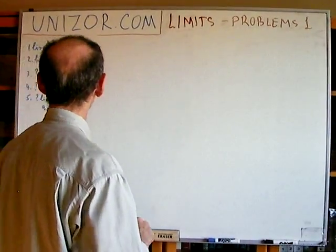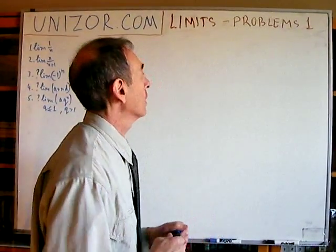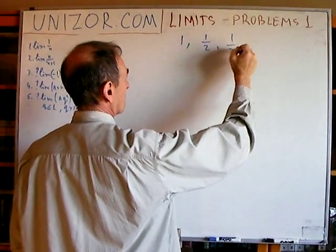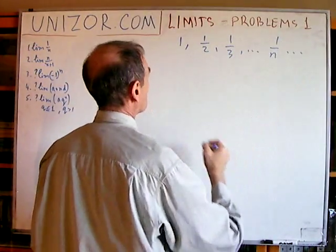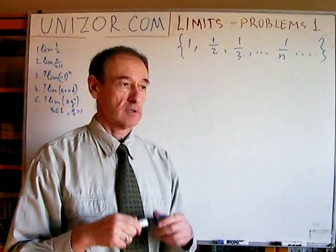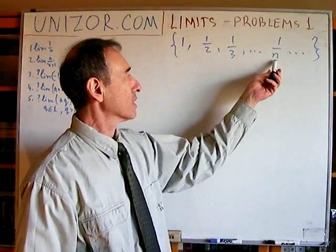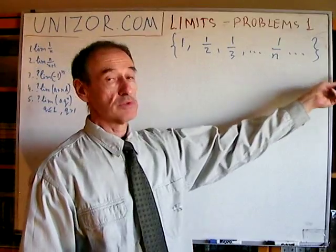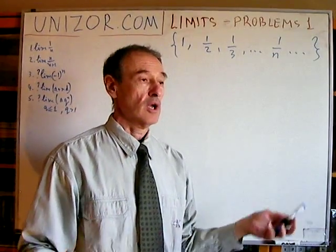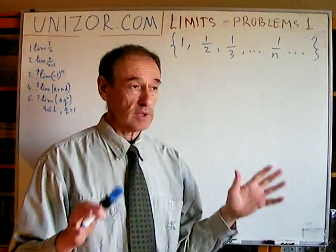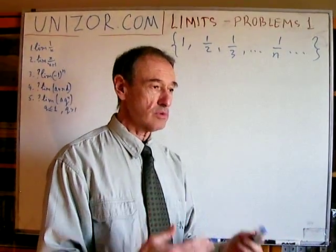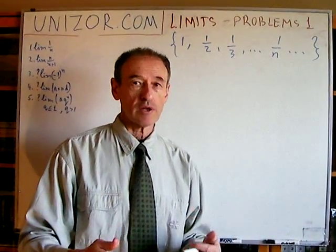I have five problems here, so I will do them one at a time. Problem number one: you have a sequence of fractions 1/n. The question is, does it have a limit, and if it does, what is this limit? Well, obviously everybody understands that if the denominator goes to infinity, then the fraction with a fixed numerator should go down to zero. And it does. So let me prove that zero is a limit of this sequence — not just intuitively, but mathematically according to our definitions.